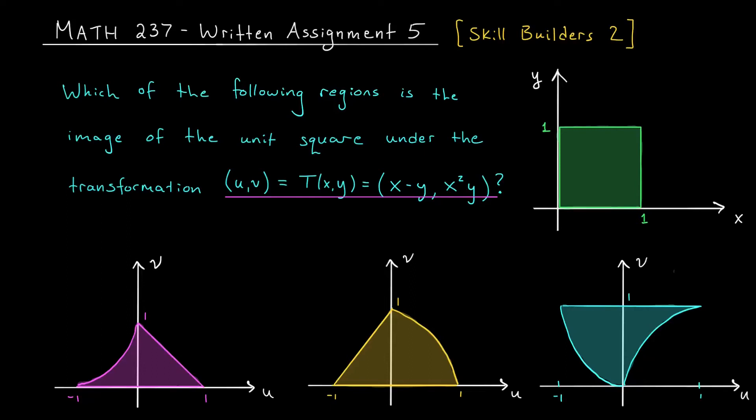Hey there, Math 237 students, Zach here. Today we're going to be discussing a question related to skill builders 2 from your written assignment 5. There, you're going to be matching transformations of the unit square in the xy plane to images of these transformations in the uv plane.